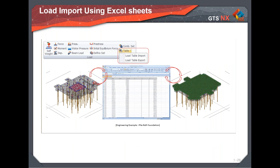The substructure method models ground behavior using springs in the structural software, making structural changes easier to perform. However, it requires an iterative process between the structural and geotechnical engineer. The geotechnical engineer runs analysis in GTS NX to get displacement and stresses, provides spring stiffness at different locations to the structural team, and the process iterates until a convergence criterion — such as 5% or 10% displacement difference — is reached.